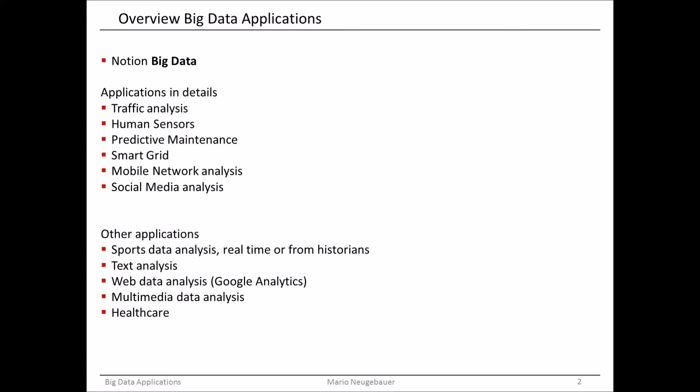So this is first the traffic analysis. This is basically something which you have available in Google Maps, for example, when you overlay the traffic utilization on some streets. Then human sensors. This is quite an interesting application, not so common yet, but interesting because there are a lot of data collected, acquired from different sensors, and we can merge that together to realize the state in certain situations.